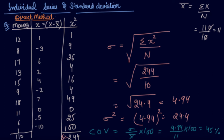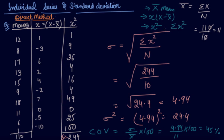So this is the direct method. You first find the mean x̄, then take the deviation x minus x̄, then take the square of each deviation, add all the squared deviations, and put the result into the formula.